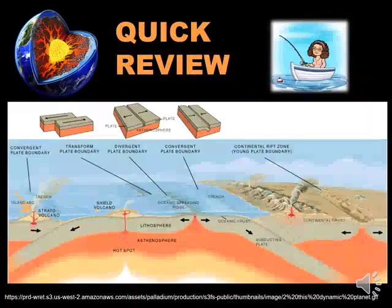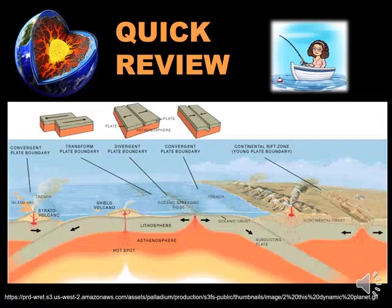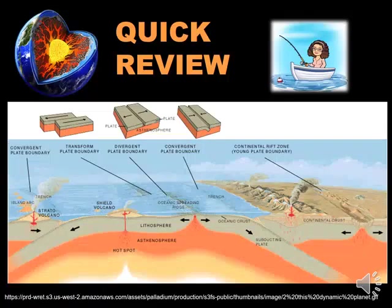The impact of colliding plates can cause the edges of one or both plates to buckle up into mountain ranges, or one of the plates may bend down into a deep sea floor trench. A chain of volcanoes often forms parallel to convergent plate boundaries, and powerful earthquakes are common along these boundaries. The Pacific Ring of Fire is an example of a convergent plate boundary. Along divergent boundaries, earthquakes are common and magma rises from the Earth's mantle, solidifying to create new oceanic crust. The Mid-Atlantic Ridge is an example of a divergent plate boundary. One of the most famous transform plate boundaries occurs at the San Andreas Fault.